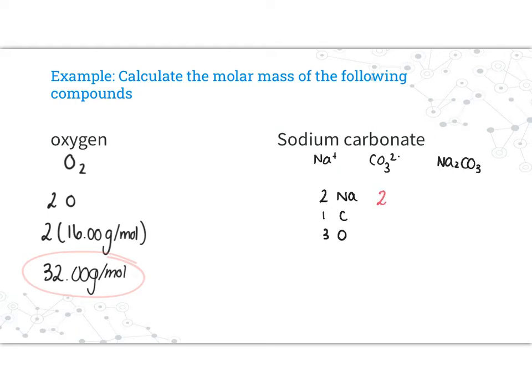Two times the molar mass of sodium - sodium is 22.99 grams per mole. I'm just going to write this vertically. Then we have one times the molar mass of carbon, which is 12.01 grams per mole. Then I need to add that to three times the molar mass of oxygen, which is 16 grams per mole.